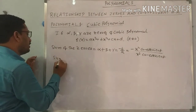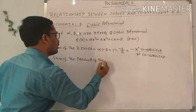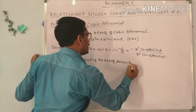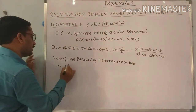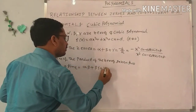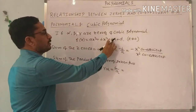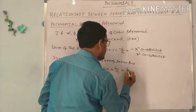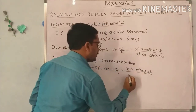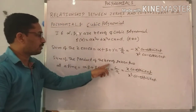Next, the sum of the products of zeros taken two at a time: alpha beta plus beta gamma plus gamma alpha equals C by A, where C means X coefficient and A means X cubed coefficient. This is the relation between the zeros and the coefficients.